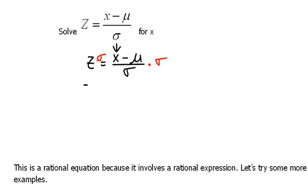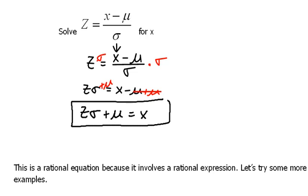So that will leave us with z times sigma equals x minus mu. And remember, we're supposed to be getting the x all by itself. Right now it's being subtracted by mu, so we're going to add mu to both sides to undo that. So now we have z times sigma plus mu equals x. We've solved that for x now.